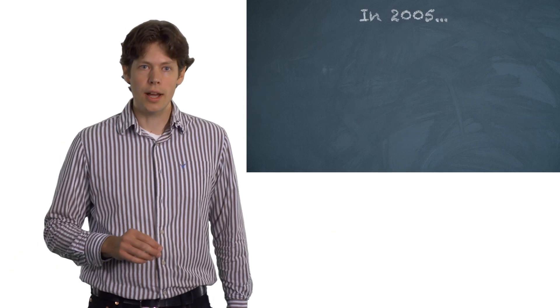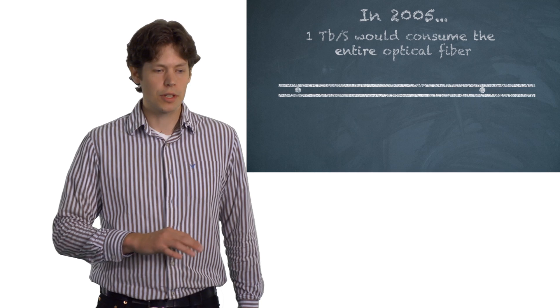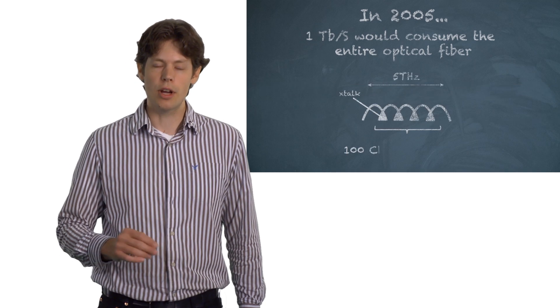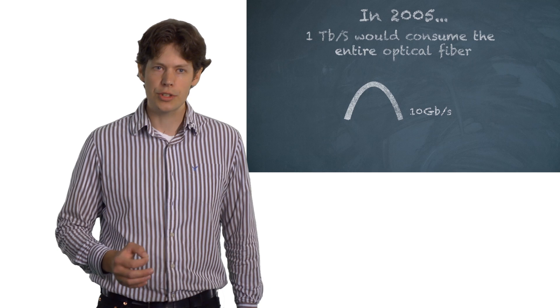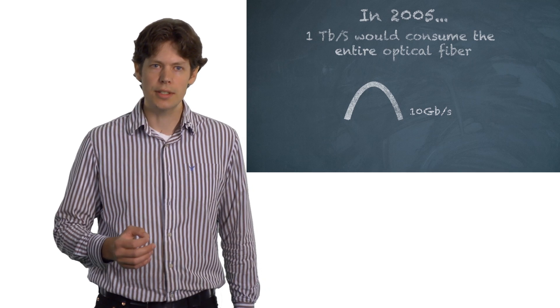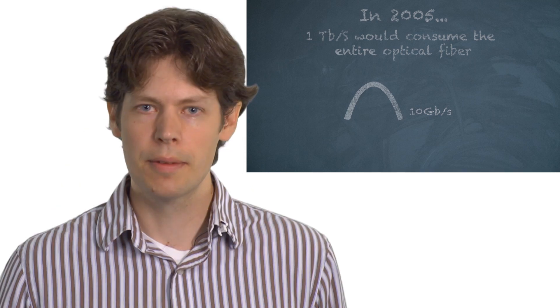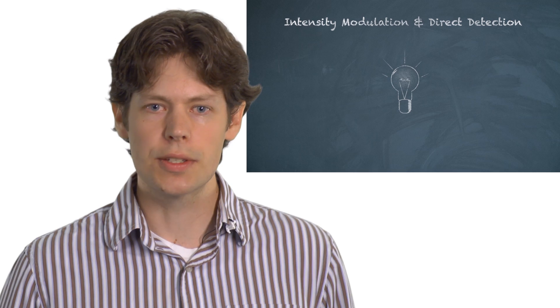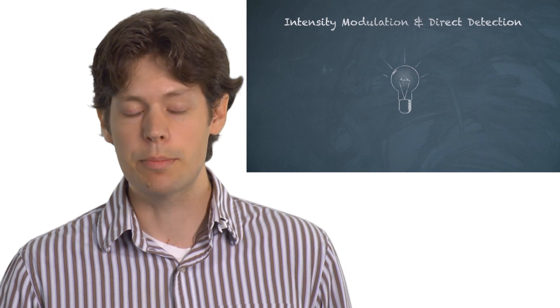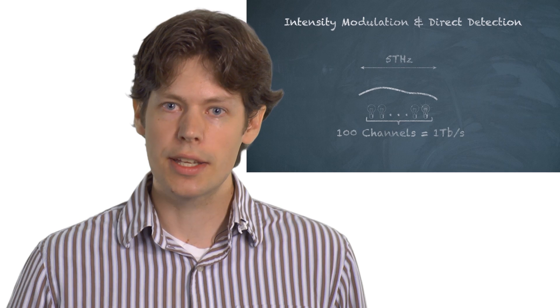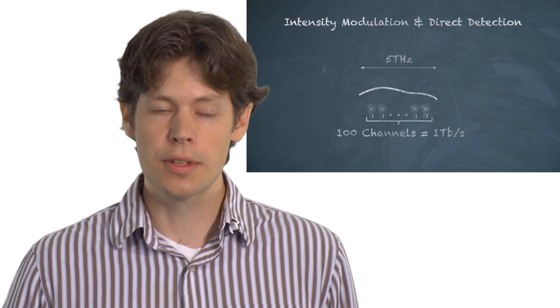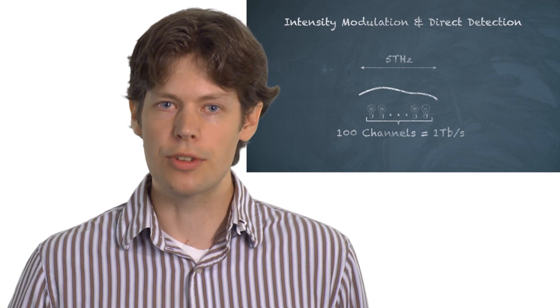As recently as 2005, one terabit per second would have consumed the entire available spectrum of an optical amplifier. This is due to the low spectral efficiency of conventional intensity modulated direct detection or IMDD transceivers. In these systems, information bits are transmitted in the form of light that's being switched either on or off. 100 of these 10 gigabit per second IMDD channels would fill the spectrum of the transmission fiber.